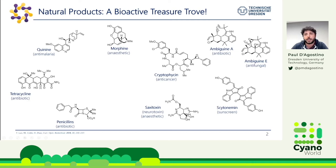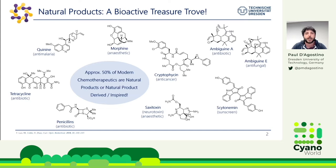Natural products are important because about 50% of chemotherapeutics are natural products or natural product-derived. It is the aim of the field to identify novel natural products with new structures and therefore new bioactivities. Traditionally, natural products were discovered using a top-down approach, also known as the classical approach, which is still widely used and still widely successful.